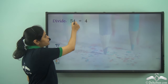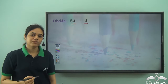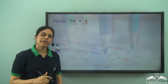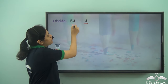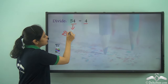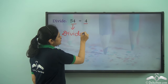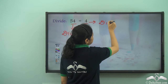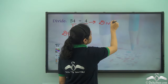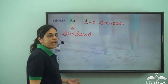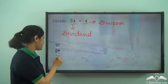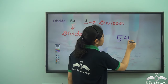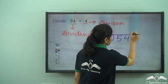We need to divide 54 by 4. How can I divide a two-digit number by a one-digit number? 54 is the dividend and 4 is the divisor. First I write 54 and I write 4 here.